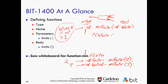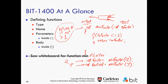I can have an if statement: if toFactor is less than or equal to 1, return early. Otherwise, I need to loop from 2 all the way up to toFactor. As soon as toFactor is divisible by i, I stop and return that number. So for minFactor(12): is 12 divisible by 2? Yes — return 2. For minFactor(7): is 7 divisible by 2? No. By 3? No. By 4, 5, 6? No. By 7? Yes — return 7. It's a brute-force approach but it works.